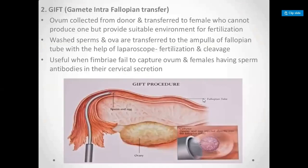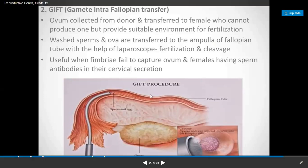Next is GIFT — Gamete Intra-Fallopian Transfer. In some cases, you can collect the gametes and place them in a suitable environment, then transfer the gametes directly into the fallopian tubes.